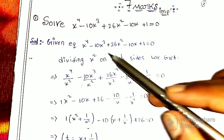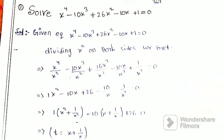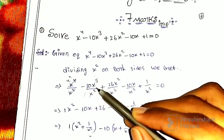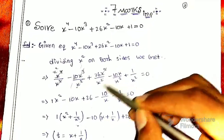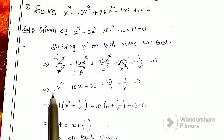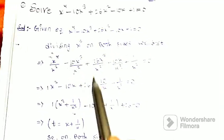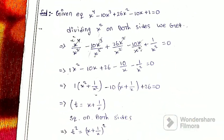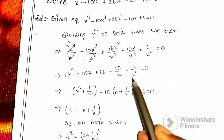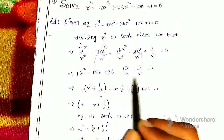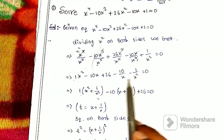After dividing by x squared: 10x divided by x² gives 10/x, and 1 divided by x² gives 1/x². After cancellation we get: x² minus 10x plus 26 minus 10/x plus 1/x² is equal to 0.